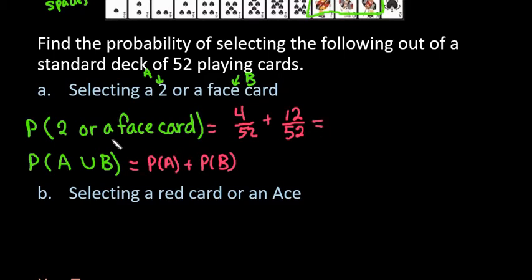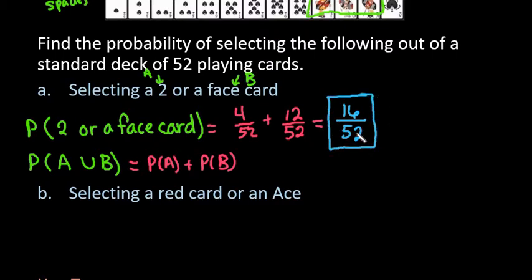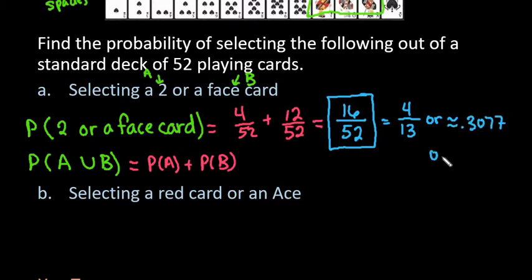Since these have a common denominator, we add the numerators: 4 plus 12 gives 16 out of 52. It is perfectly acceptable in probability to leave it as an unreduced fraction. You can reduce this to 4 over 13, write it in decimal form as approximately 0.3077, or write it in percent form. It depends on what information you're trying to portray — fraction, decimal, or percent are all acceptable.